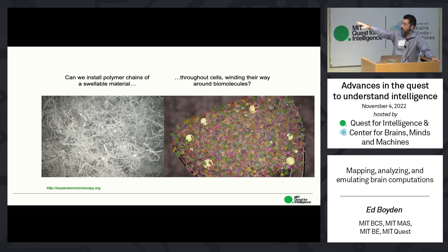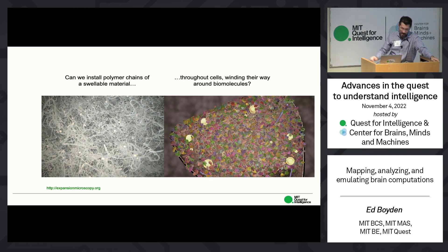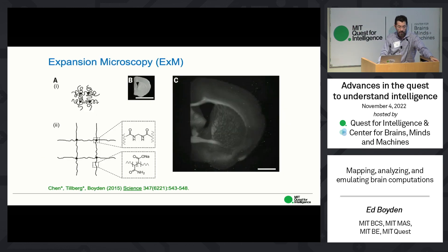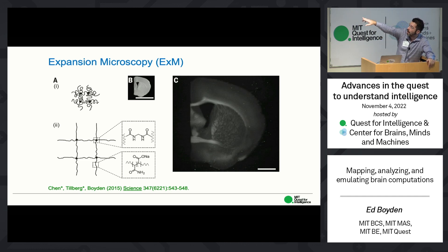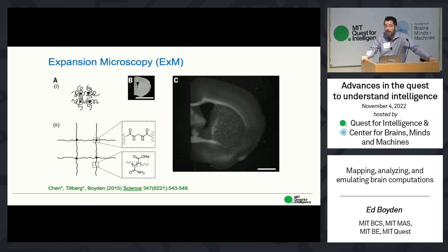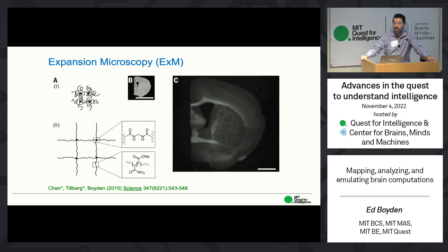The basic idea is to chemically weave this baby diaper material inside and outside brain cells, in between the biomolecules and around the biomolecules. Amazingly, in early 2015 we discovered that we could do this. Panel B shows a piece of the mouse brain, a few millimeters on a side. Panel C shows the same piece of mouse brain about a day and a half later — we've physically expanded it by a hundred times in volume, about four and a half times in each direction.